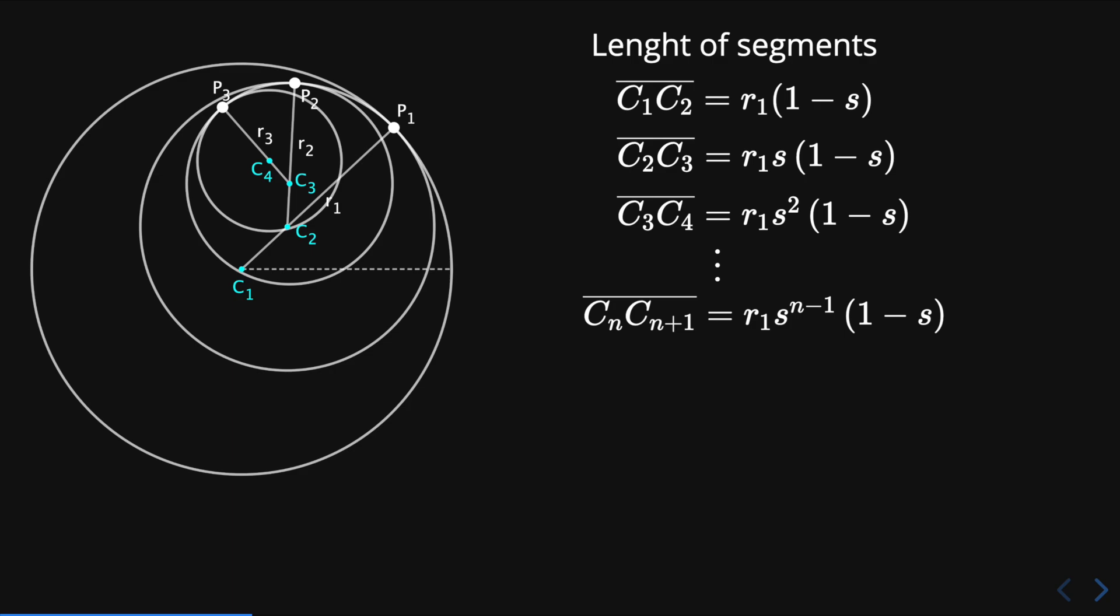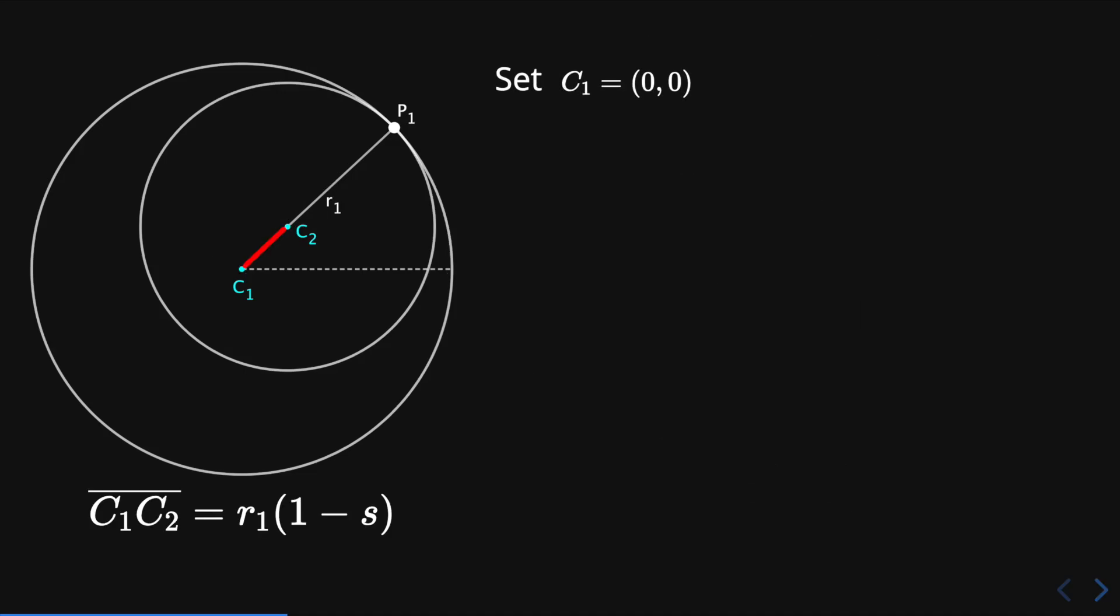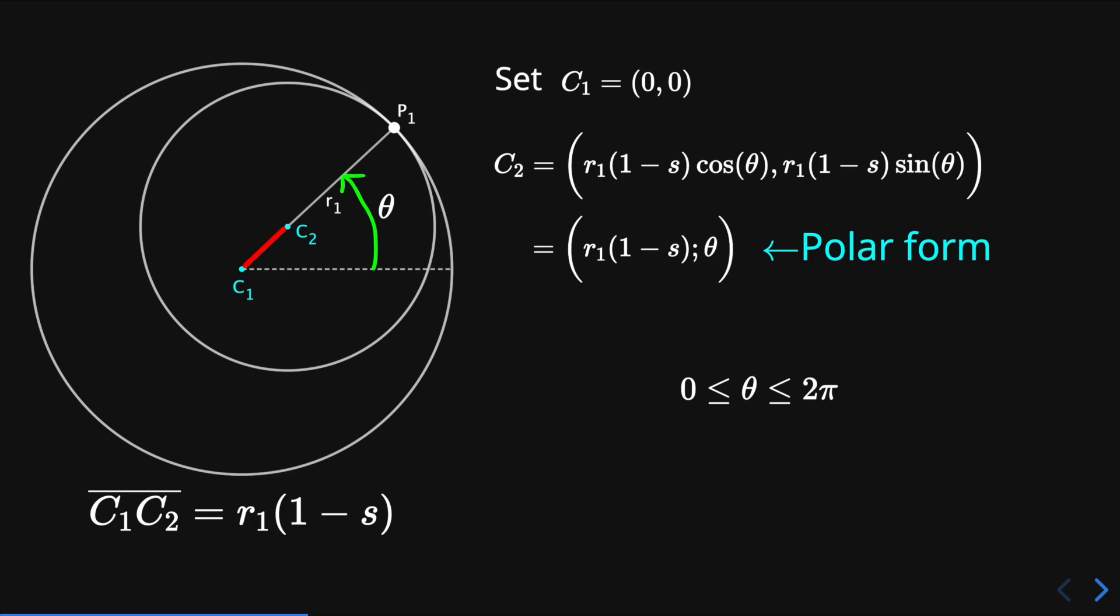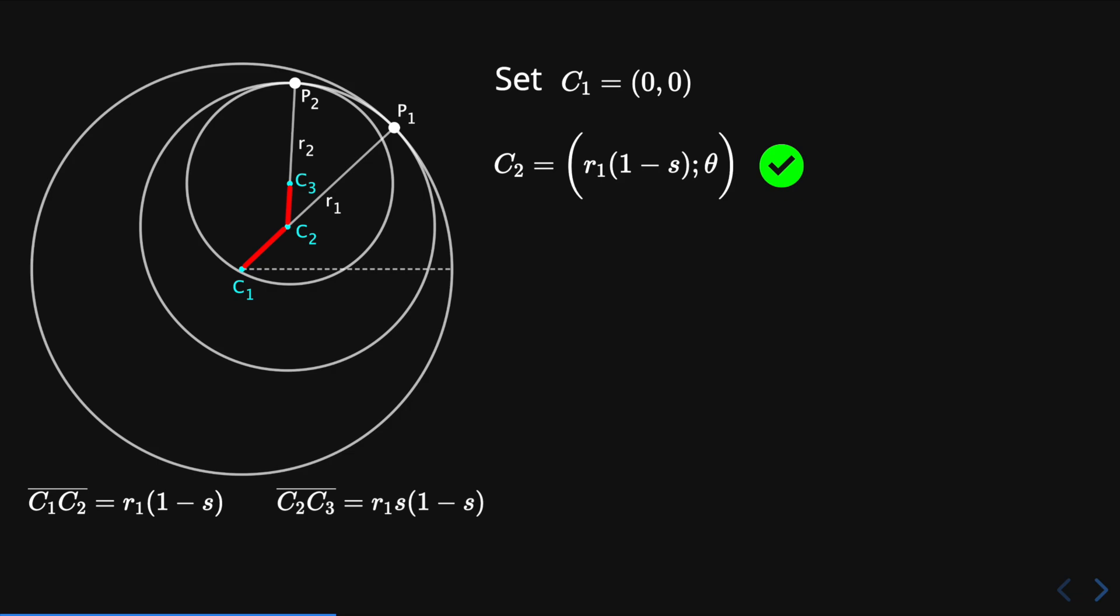Now that we know the length of the segment cn cn plus 1, we can find the coordinates of each point cn. Set point c1 equal to 0 comma 0, the origin. The point c2 has the following Cartesian coordinates, where r1 times 1 minus s is the length of c1 c2, and theta is the counterclockwise angle that is made with point p1, the origin c1, and the x-axis. Here theta is between 0 and 2 pi. We can rewrite this point using the polar form just to simplify the notation. So we have obtained the polar coordinates of c2.